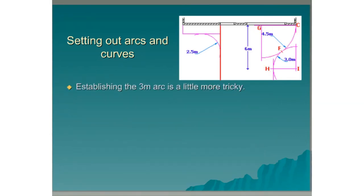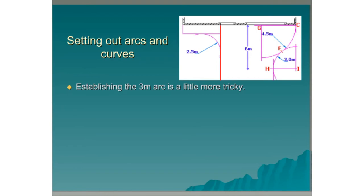Establishing the 3 metre arc is a little more tricky. We can see that its origin I is located on a perpendicular from the building aligned with the corner C and is 6 metres from the baseline.